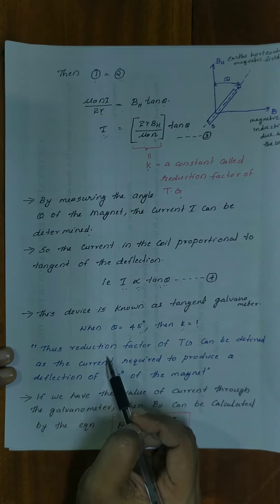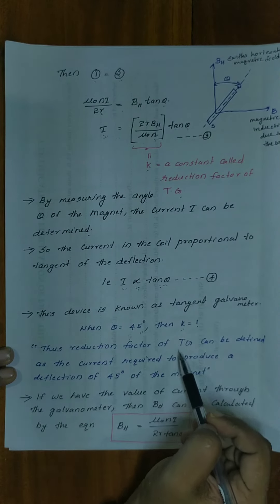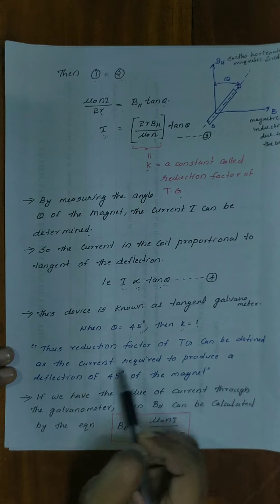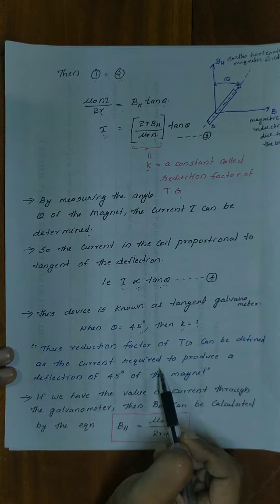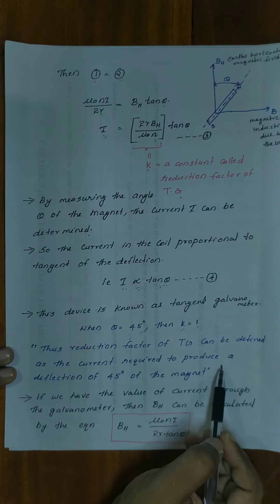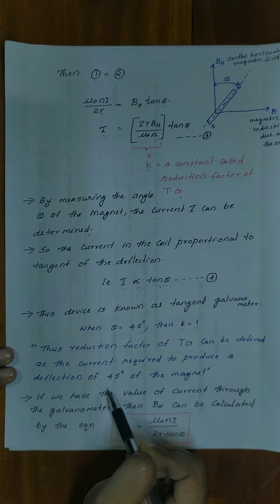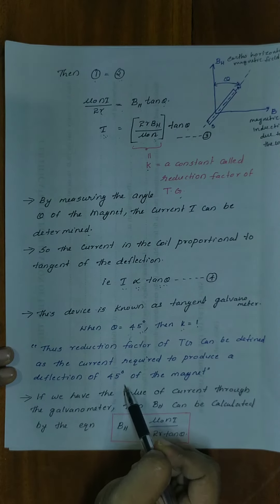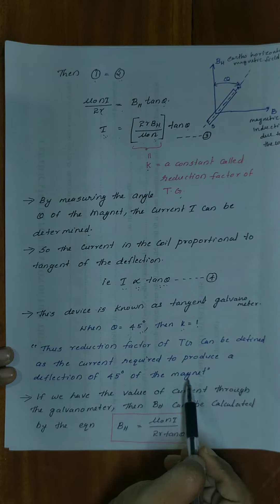The reduction factor of the TG can be defined as the current required to produce a deflection of 45 degrees of the magnet in the tangent galvanometer.